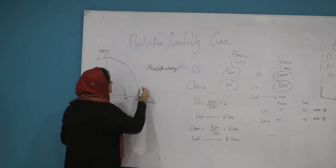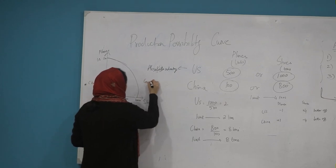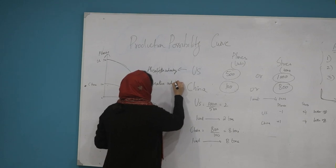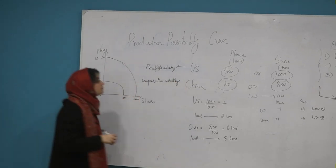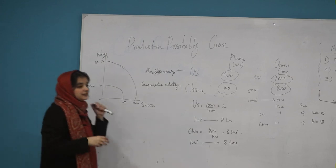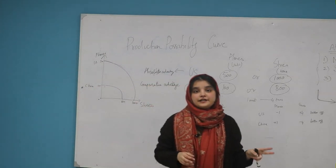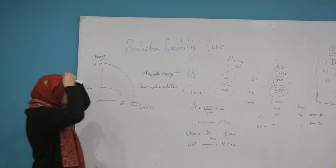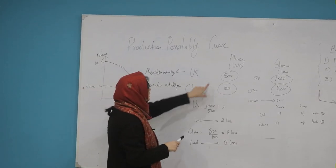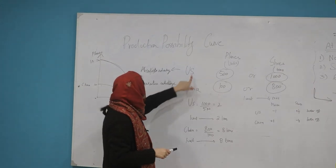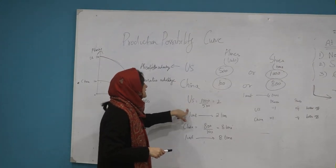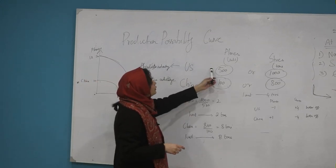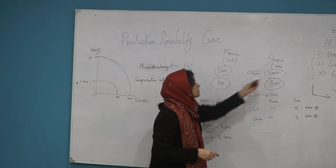Now we have to see which of these countries has comparative advantage. The comparative advantage is that any country which has less opportunity cost compared to its competitors has the advantage. Now, if we want to know which country has comparative advantage, we have to calculate the opportunity cost. That means we need to know how many shoes will be given up for one unit of plane.